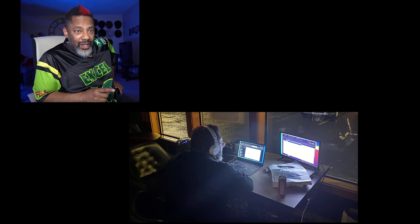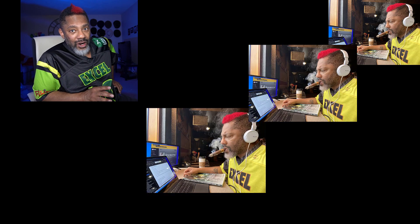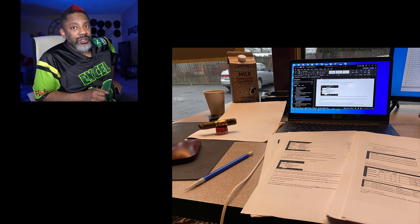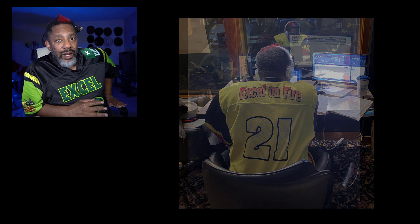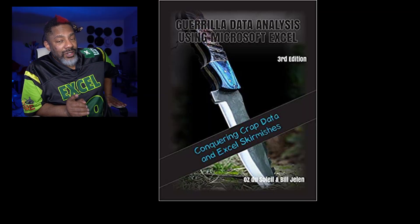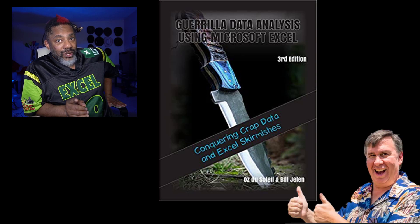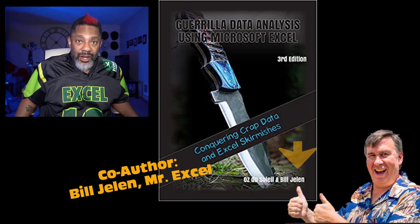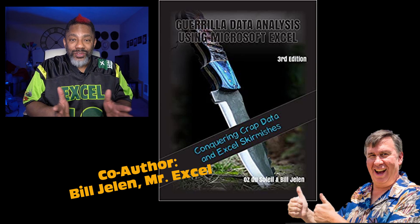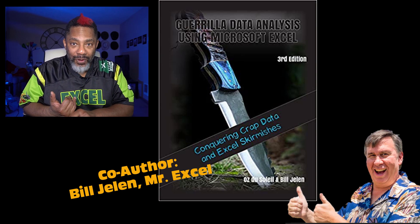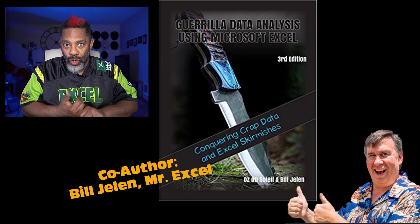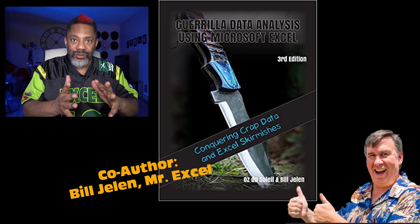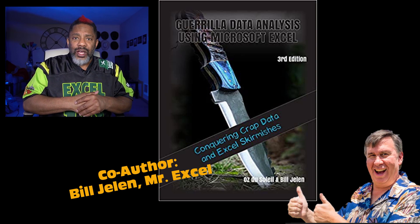Over the past few months, I have been heads down at a cigar lounge writing the third edition of Gorilla Data Analysis. Sometimes I was there for nine hours writing. This book is called Gorilla Data Analysis, third edition, conquering crap data and Excel skirmishes. We are doing more than Excel tips and tricks — yes, there will be pivot tables. We're updating it to include Power Query and unpivot, and we've got the LET function, which I wrote about last week.